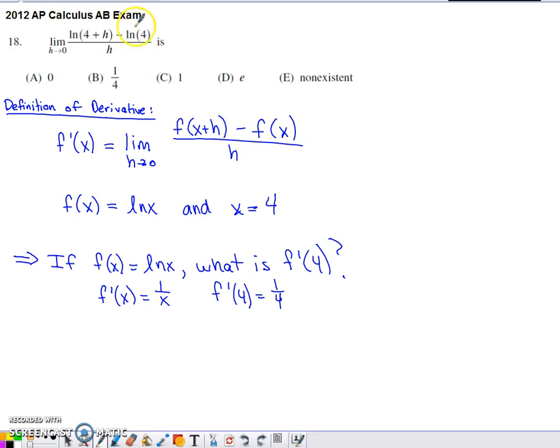In the denominator, if I had 4 plus h minus 4, the change in the corresponding x values to what we see plugged into the function within the numerator, what I'm looking at is I am looking at a slope calculation. The denominator of that slope calculation is approaching 0.